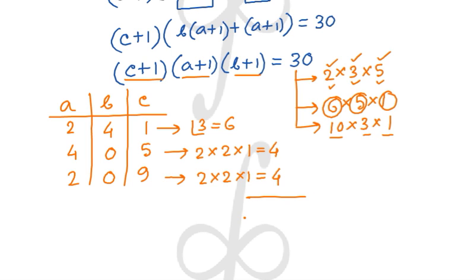So the total number of possible three-digit numbers is 6 + 4 + 4 = 14. Therefore, 14 three-digit numbers satisfy the given condition.